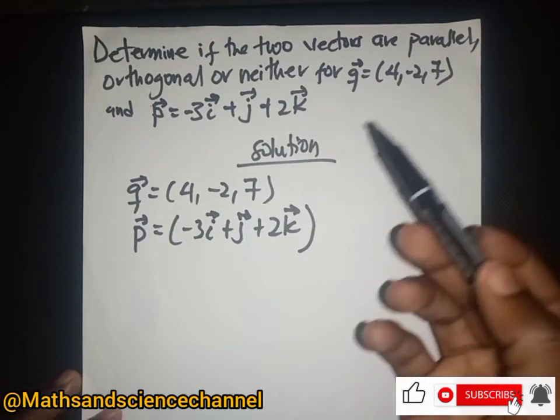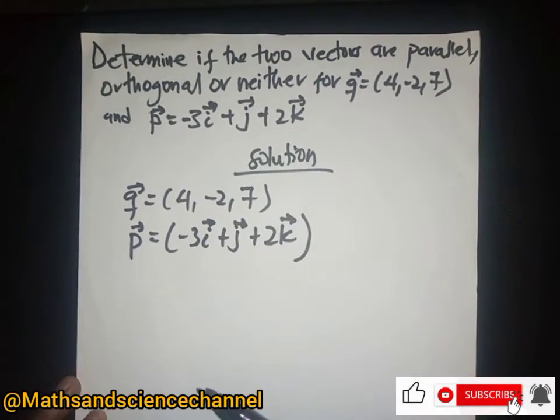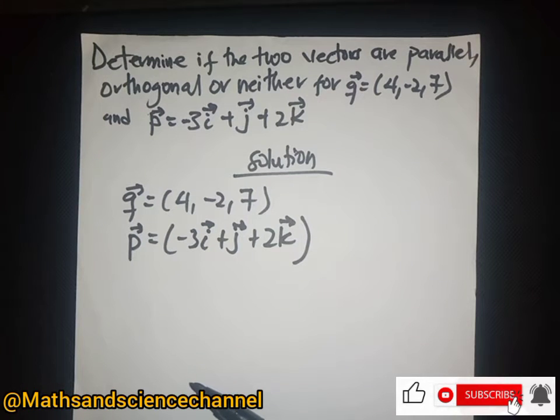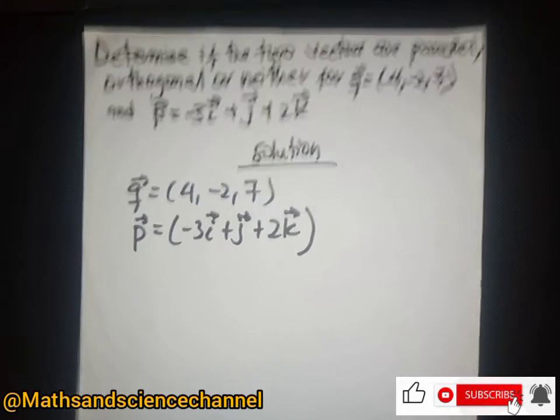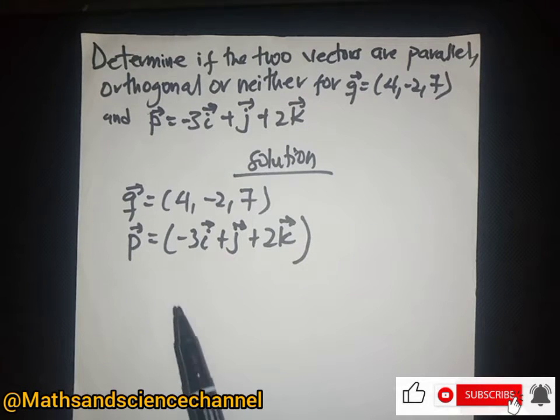Now, we have to determine if the two vectors are parallel or orthogonal. If you look at a quick inspection, the first and second components of the two vectors are 4 and -2 here.